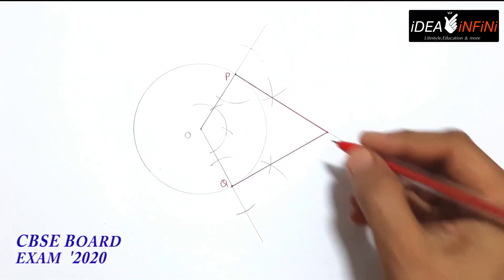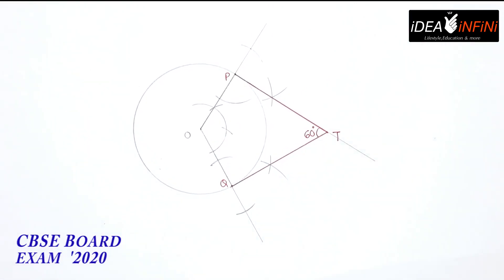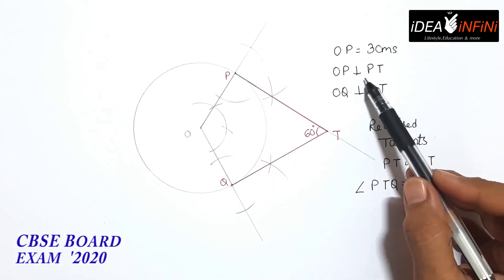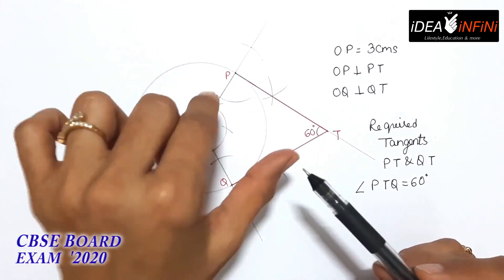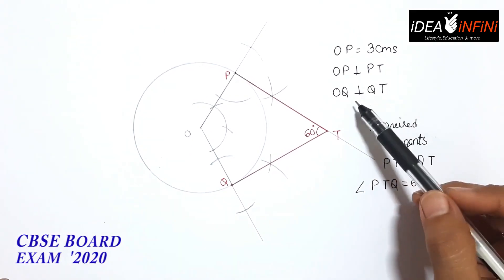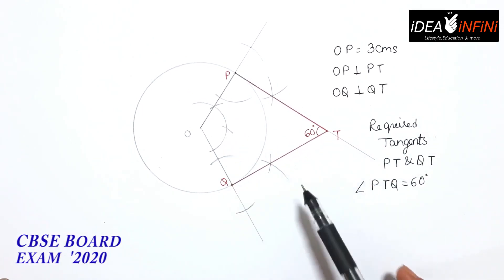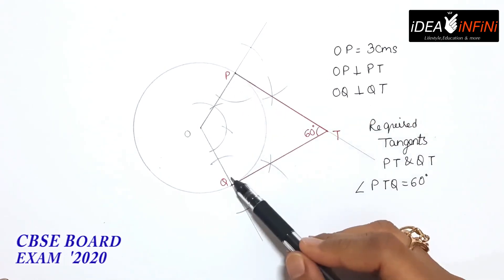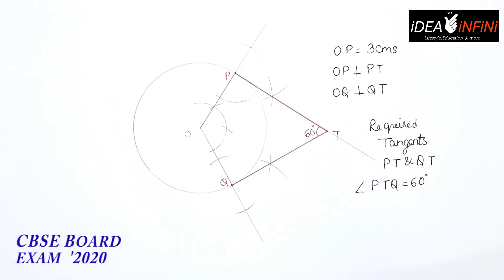बिल्कुल perfect 60 degree आ रहा है। इस point का नाम T है। OP = 3 cm, OP perpendicular to PT — यह tangent की property है कि tangent और radius perpendicular होते हैं। OQ is also perpendicular to QT। Internal angle 120 degree है — यह 90 plus 90 plus 120 = 300, तो यह 60 degree automatically आ जाता है क्योंकि quadrilateral के internal angles का sum 360 होता है। यह रहे आपके required tangents।